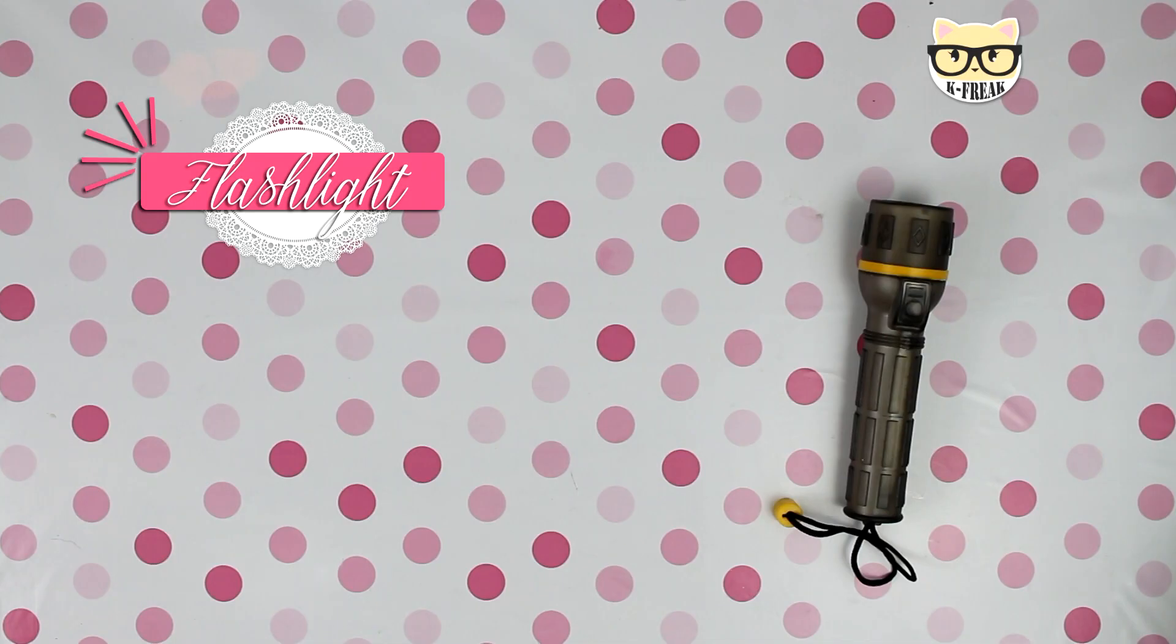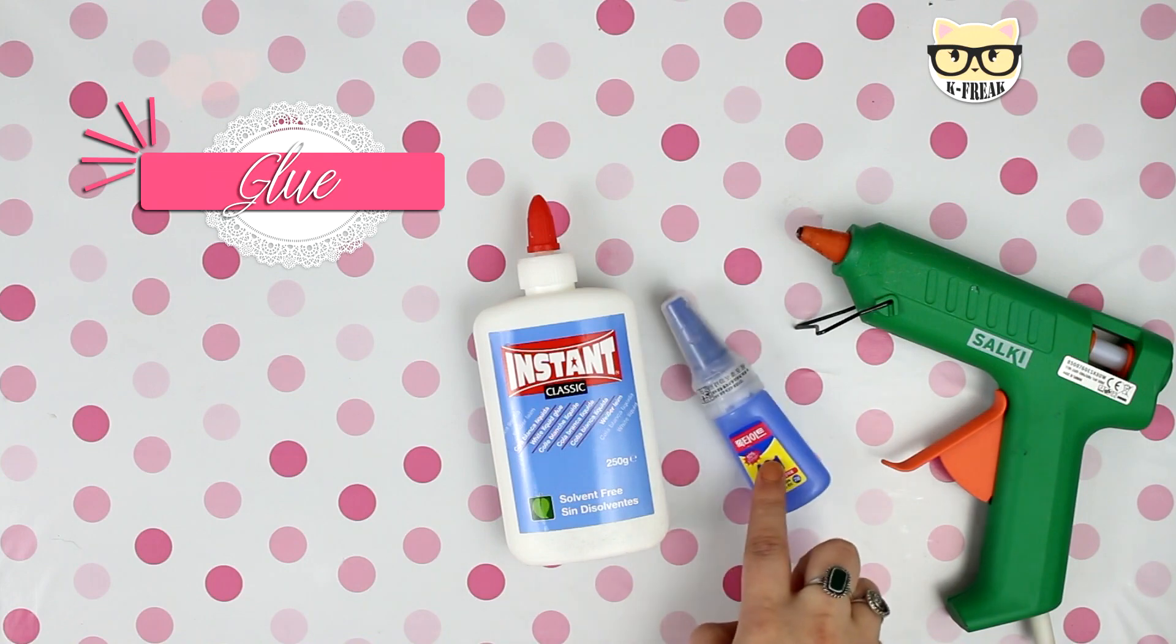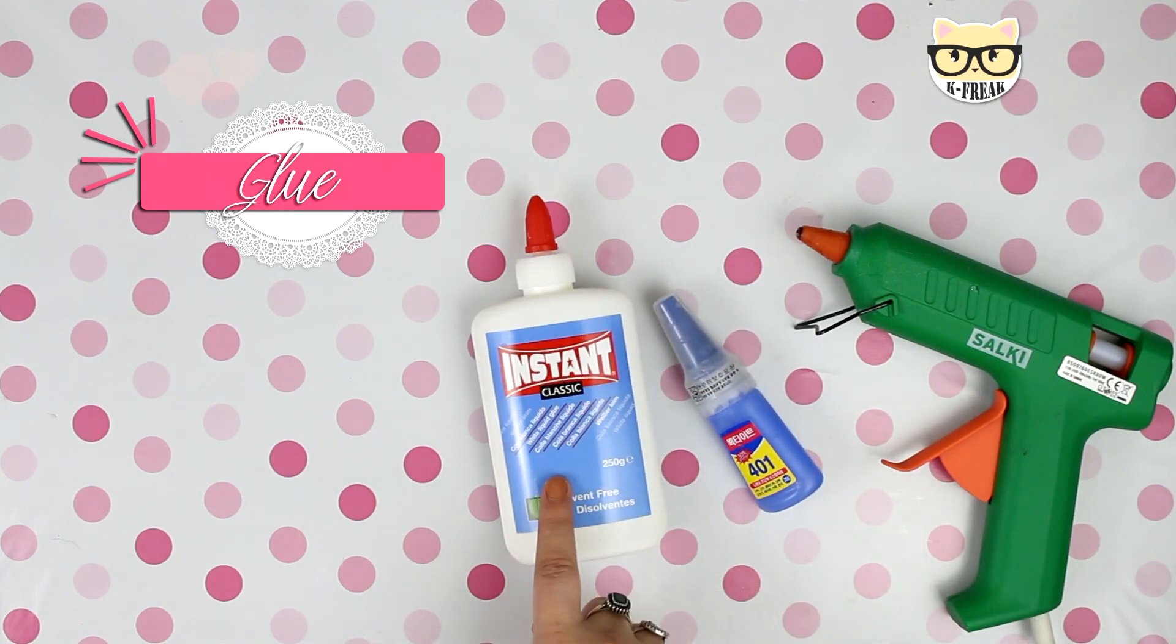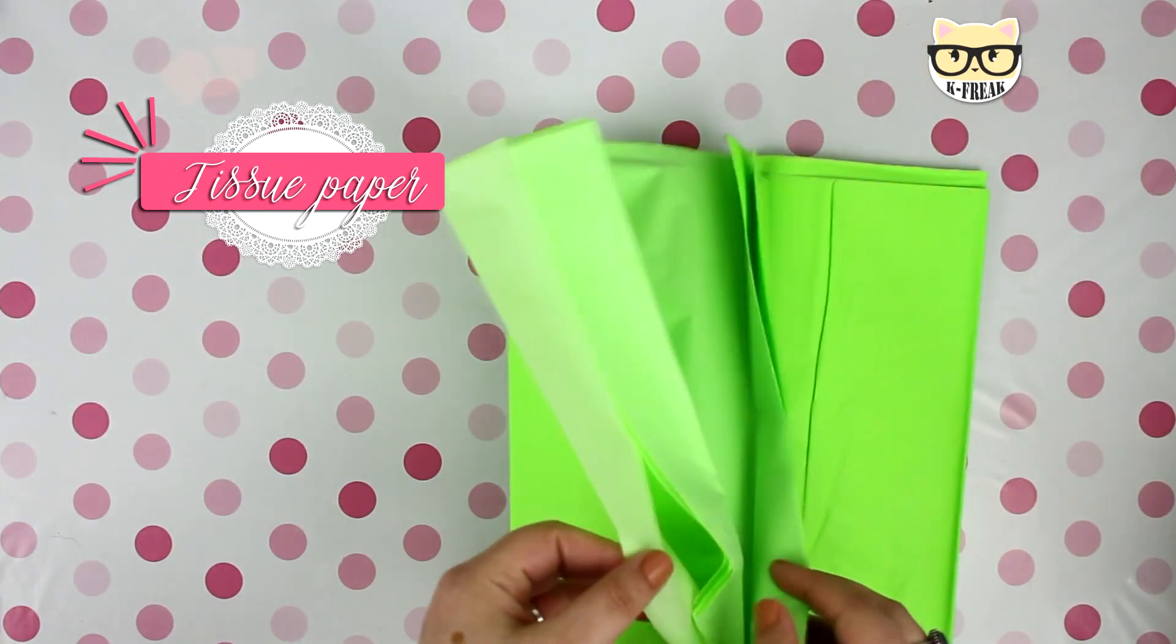We're gonna need a flashlight. I'm combining three different kinds of glue, but you don't have to. I'm using hot silicon, super glue, and white glue.